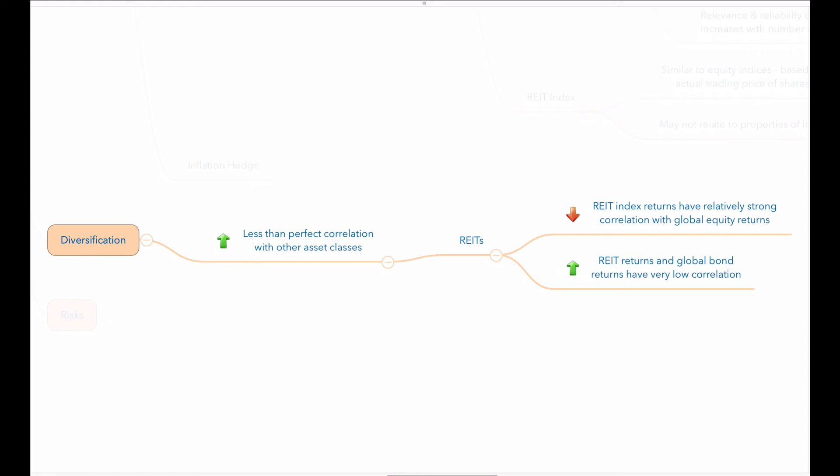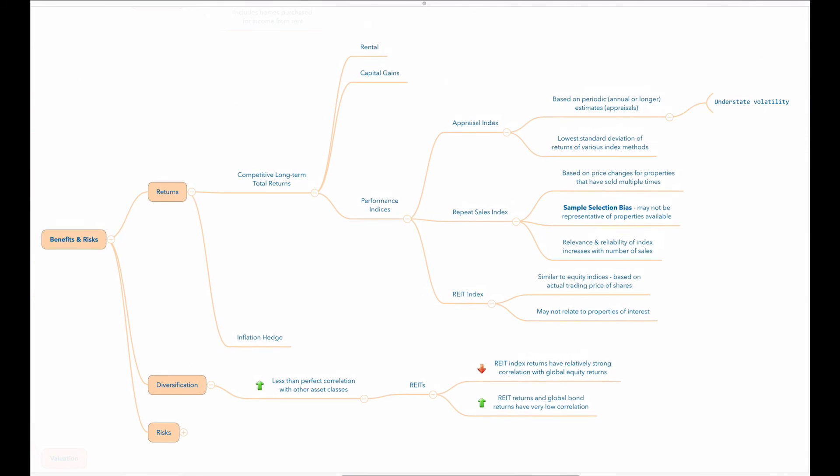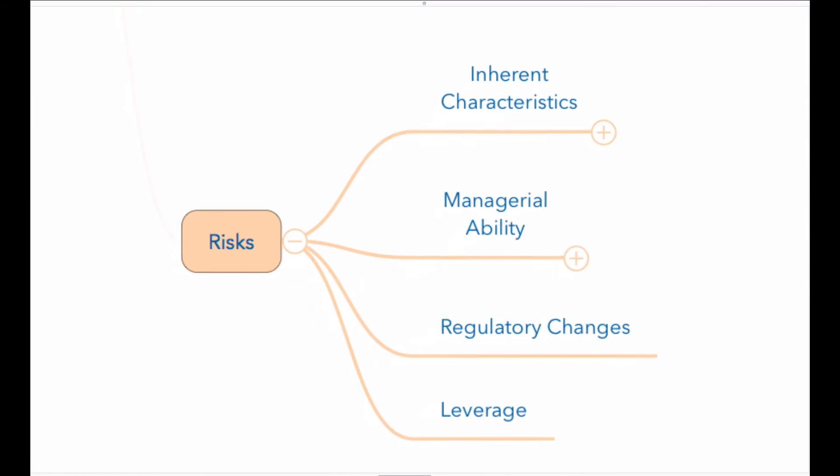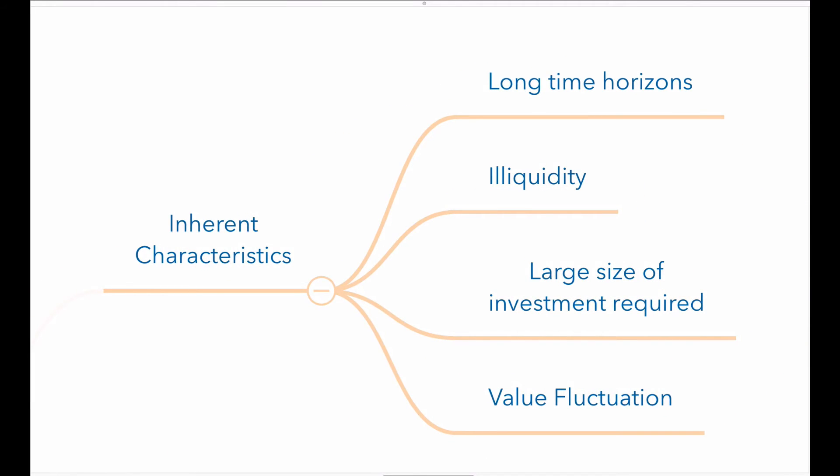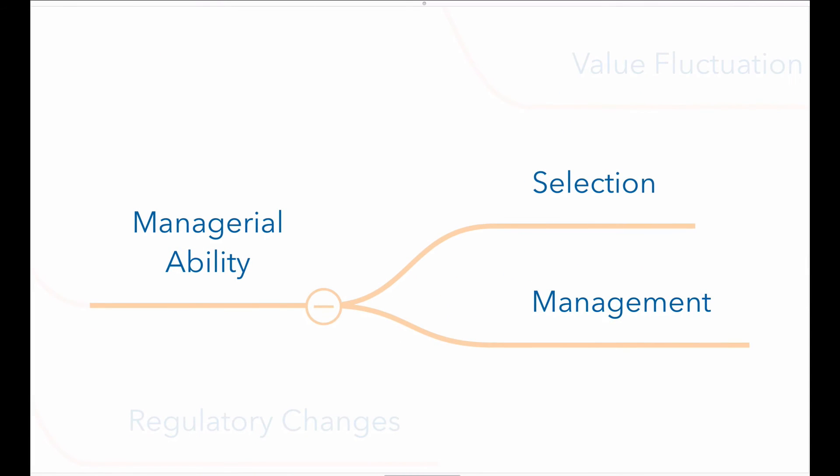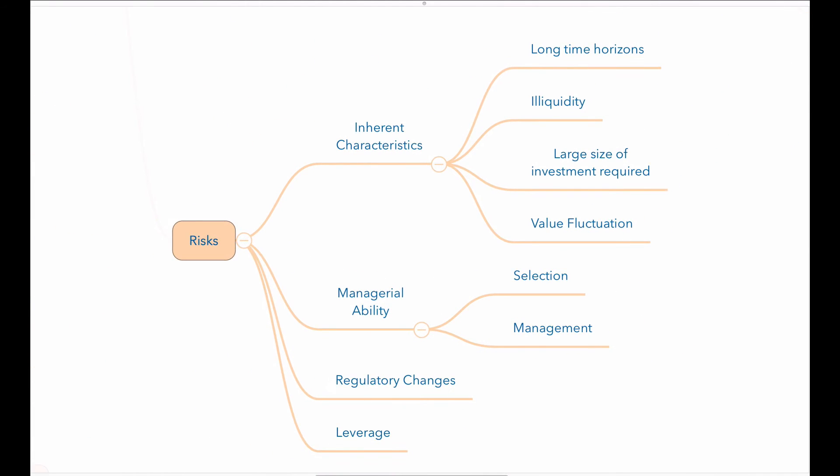In terms of risks, there are some inherent characteristics of real estate that increase the risk of these investments. Long time horizons, illiquidity, the large size of investments typically required, and the value fluctuation of real estate are examples of such risks. Other risks inherent to real estate investments include the ability of fund management to select, finance, and manage real properties and changes in government regulations. Finally, it's important to recognize that many real estate investments involve leverage, which magnifies the impact of gains and losses. Leverage increases the risk to equity investors and also increases the risk to debt investors.